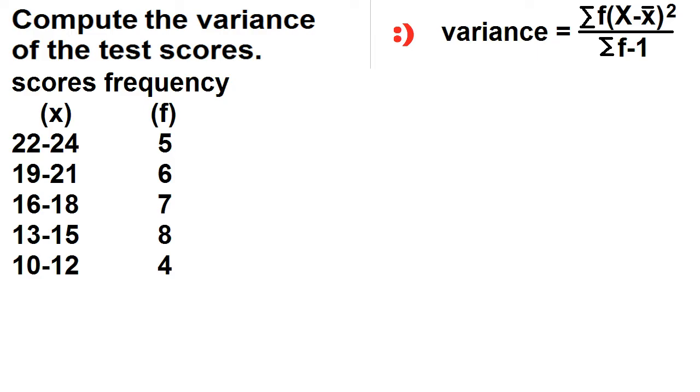Variance is equal to the sum of the product of the frequency and the square of the deviation from the mean, divided by the total frequency minus 1.